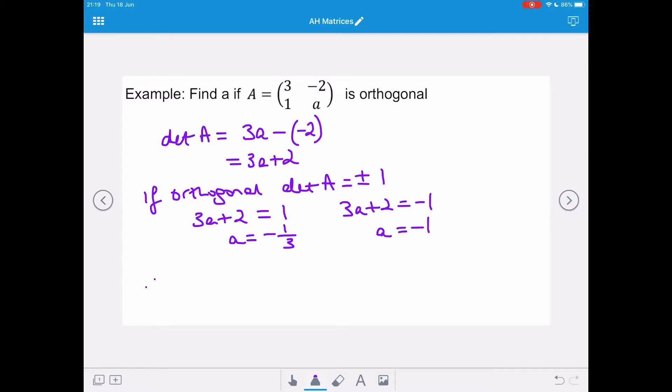So therefore, if matrix A is orthogonal, then a is the value negative 1/3 or negative 1.